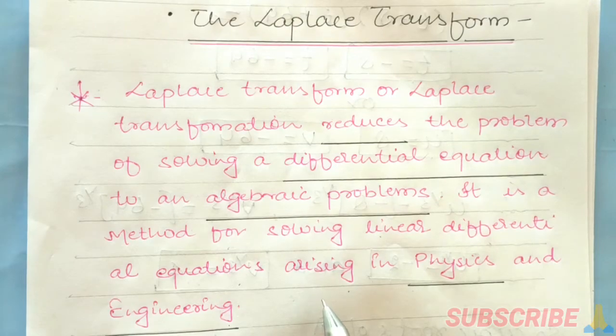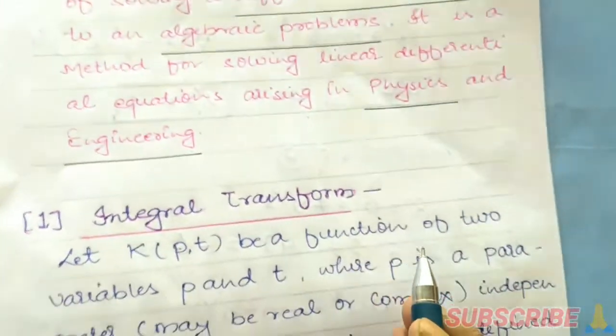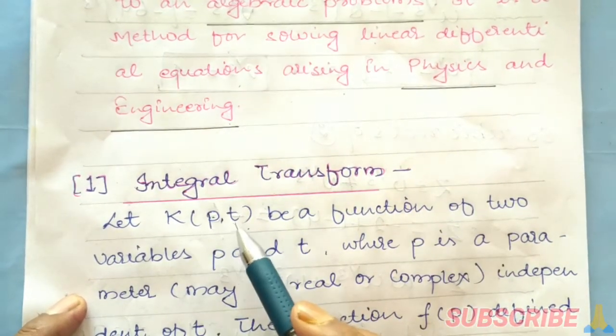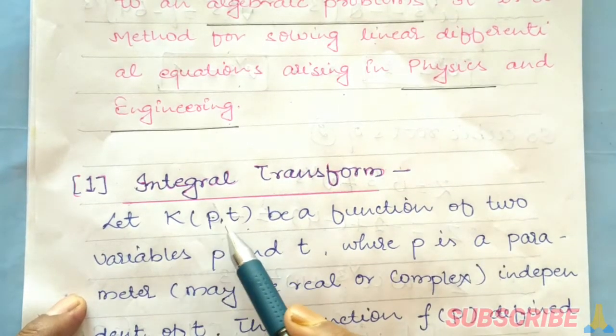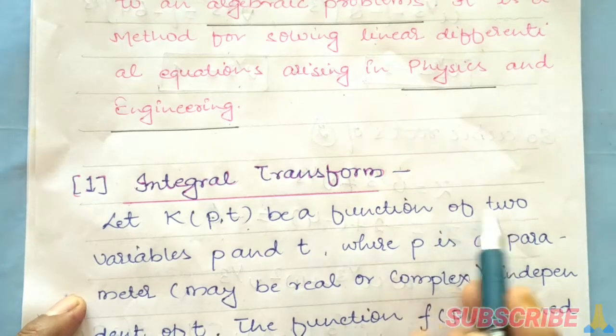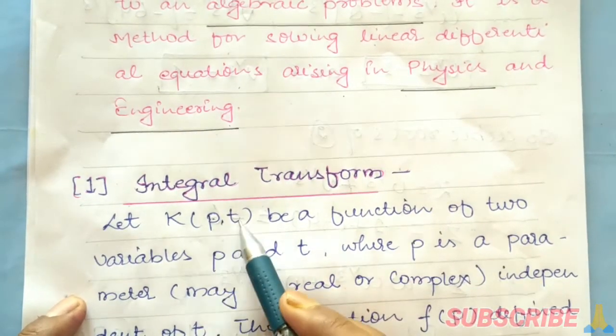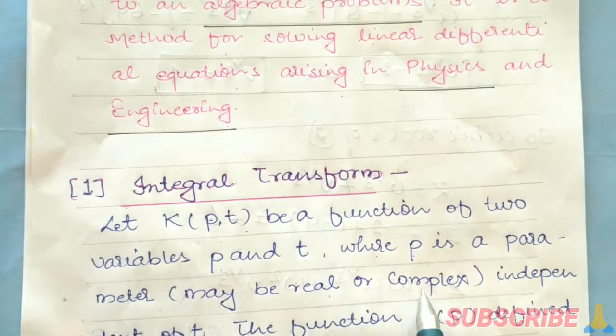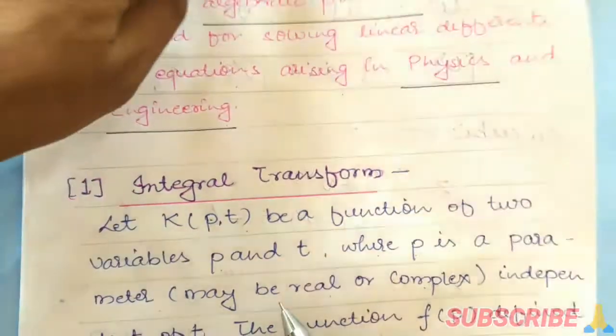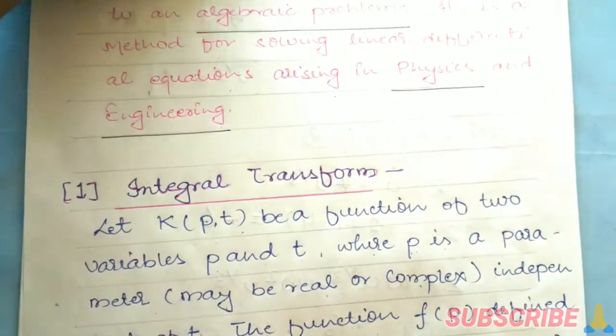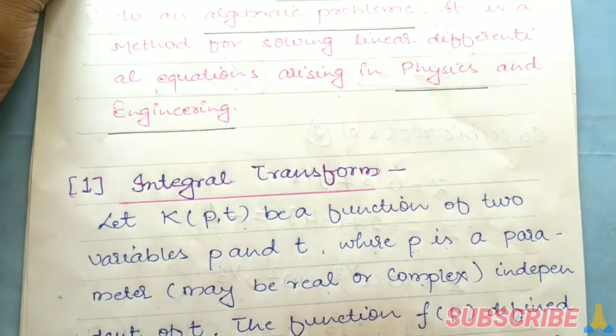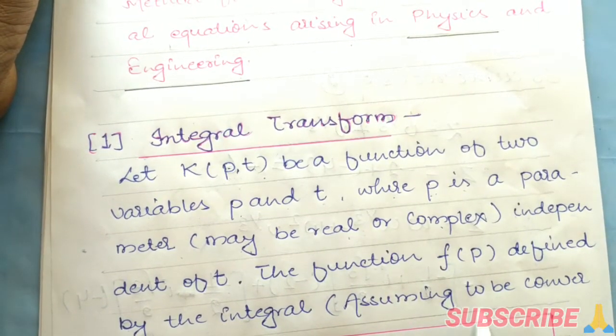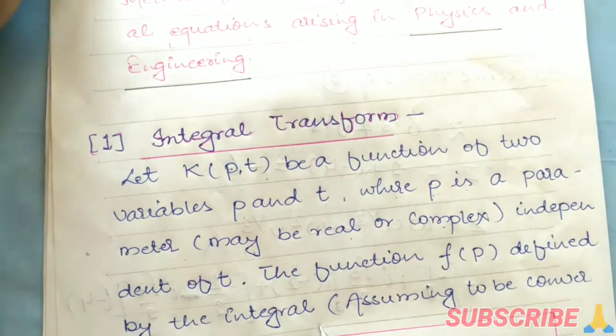Now let's talk about integral transformation. Let K(p,t) be a function of two variables p and t, where p is a parameter, may be real or complex, independent of t.